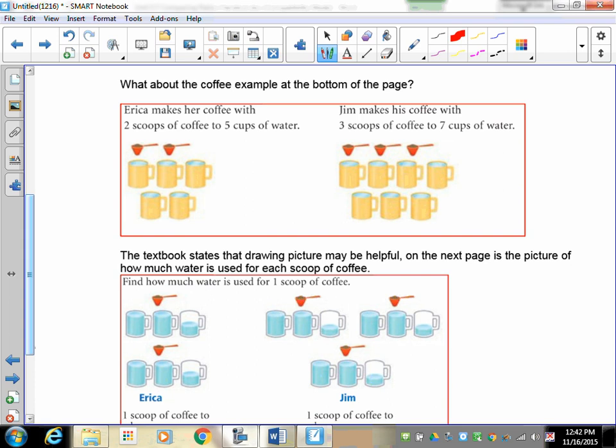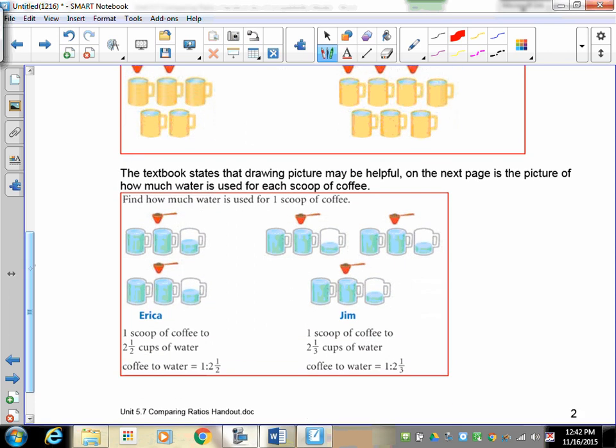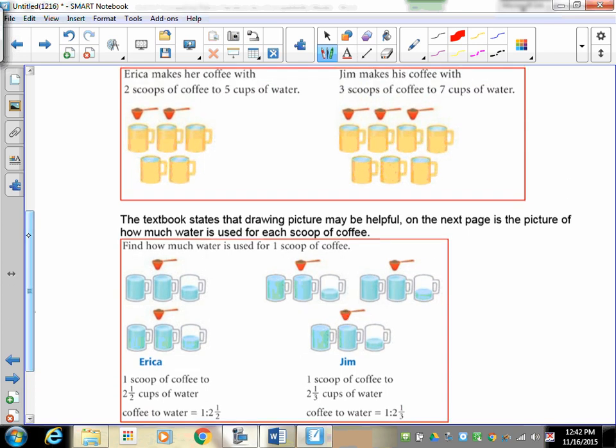Three scoops of coffee to seven cups of water. So we want to know what's the concentration here. The concentration, they're doing it by pictures. So we're dividing up for every two cups of water, how much does each one of these people use for one scoop of coffee?